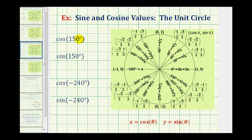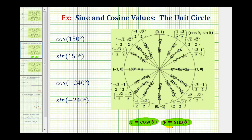We want to determine the exact trig function values using the unit circle. If we sketch these angles in standard position, the point where the terminal side intersects the unit circle will give us both the cosine and sine function values. The x-coordinate is equal to cosine theta, and the y-coordinate is equal to sine theta on the unit circle.